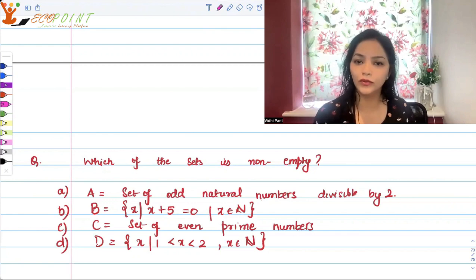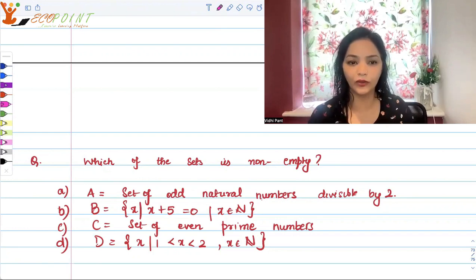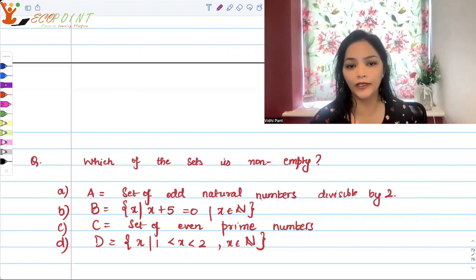I want you guys to revise number systems. Which of the sets is non-empty? So the sets that I have given to you, number 1. A is the set of odd natural numbers divisible by 2.